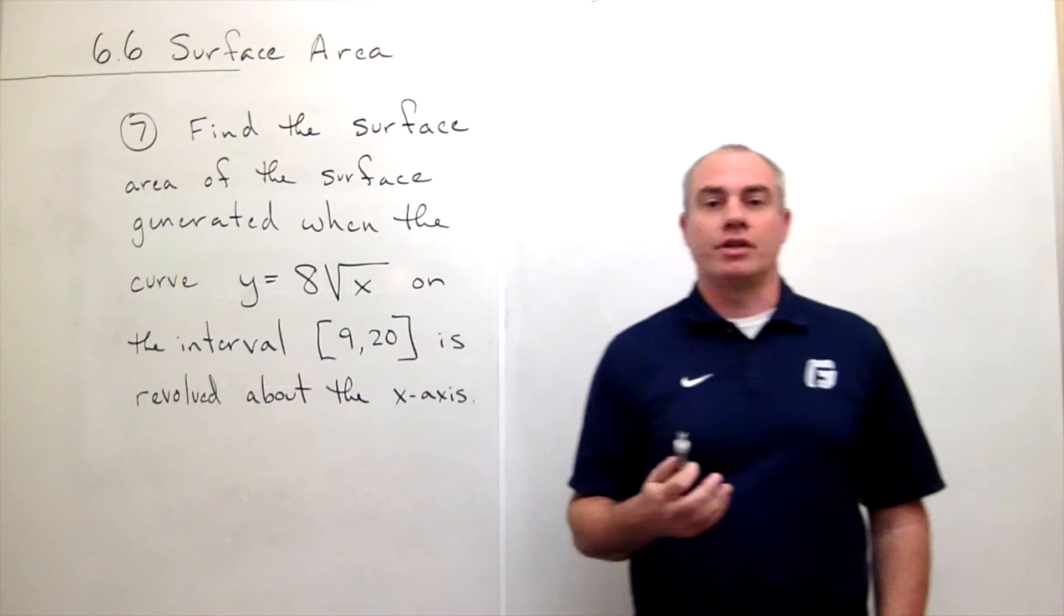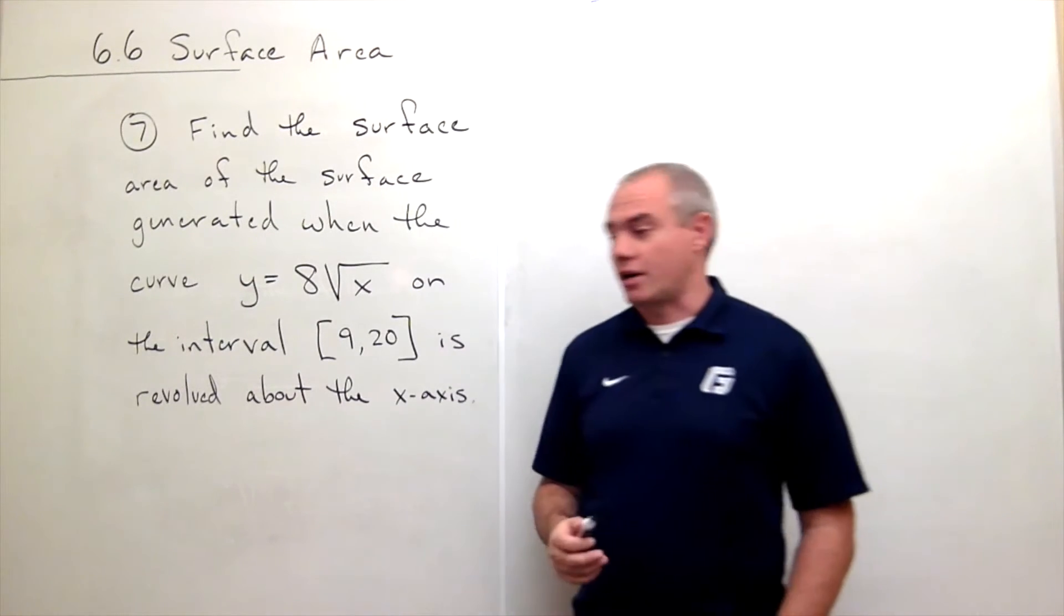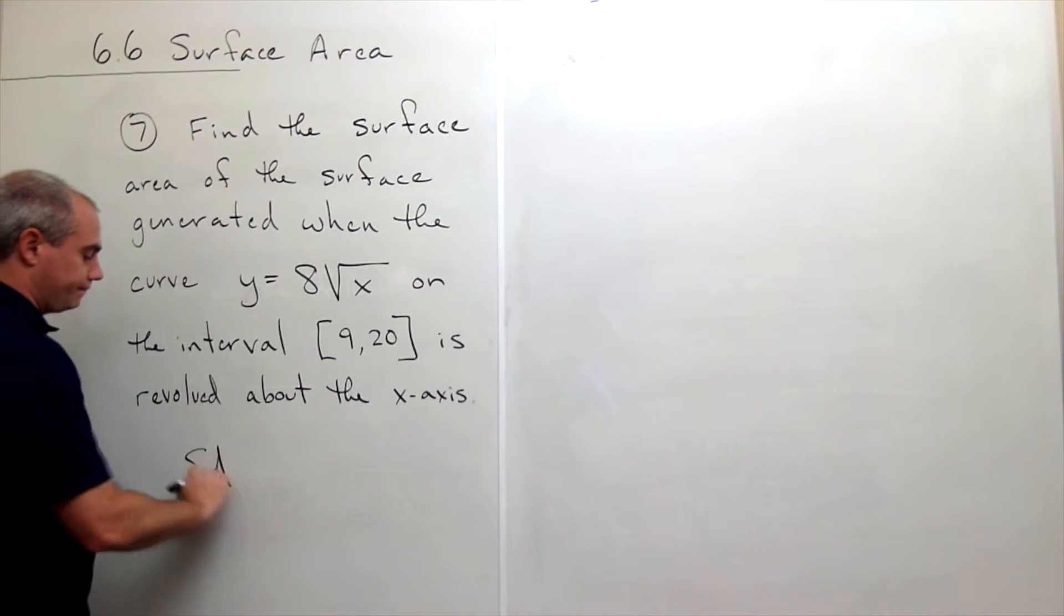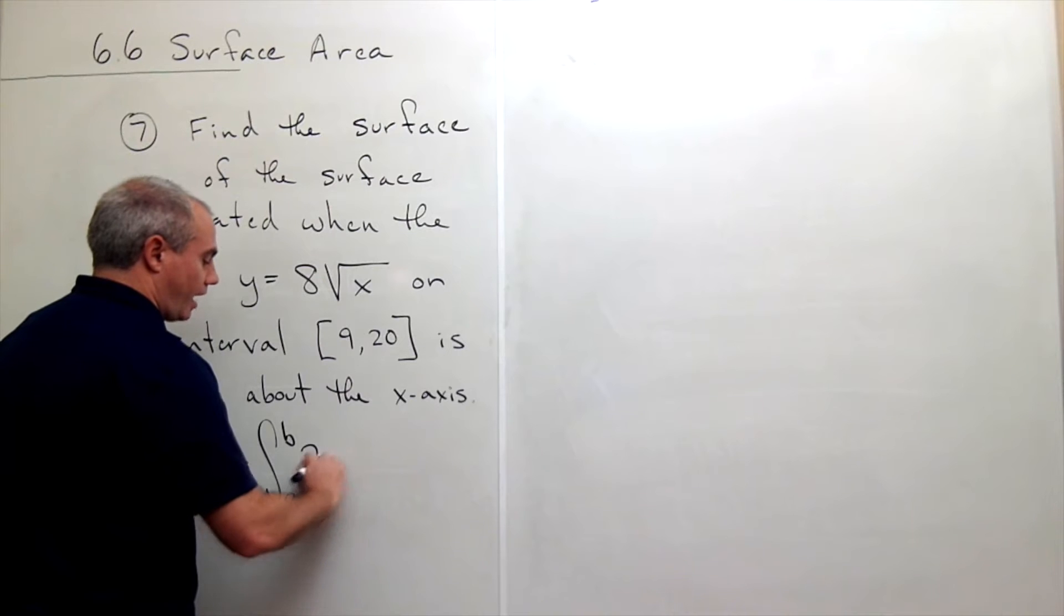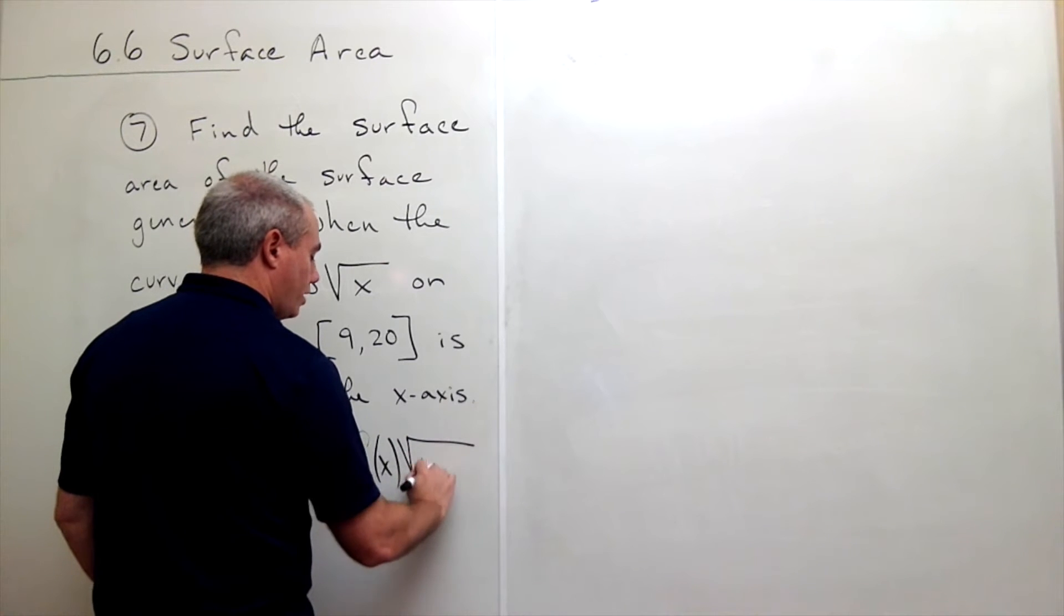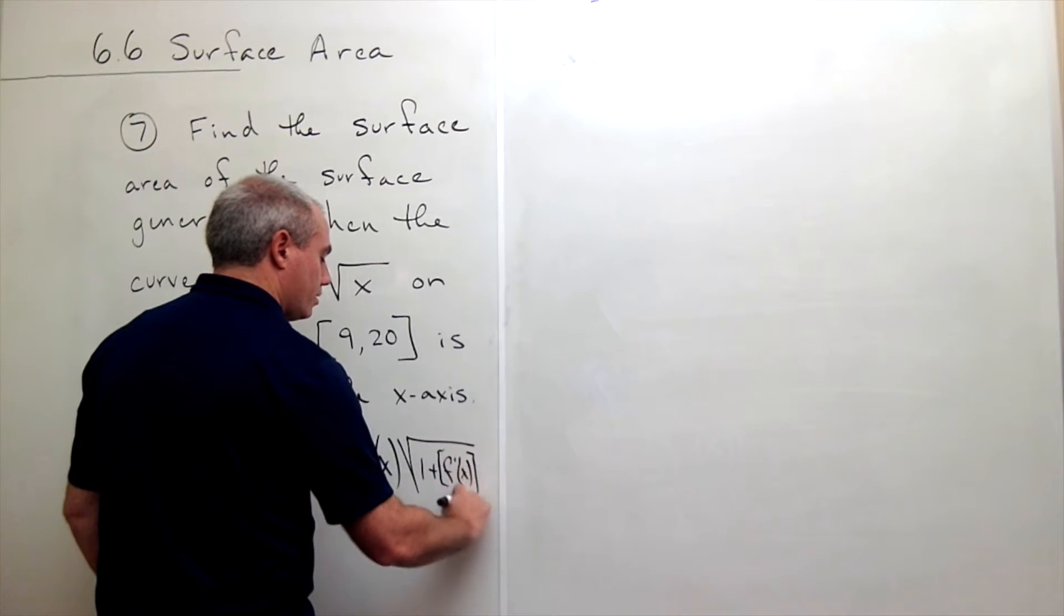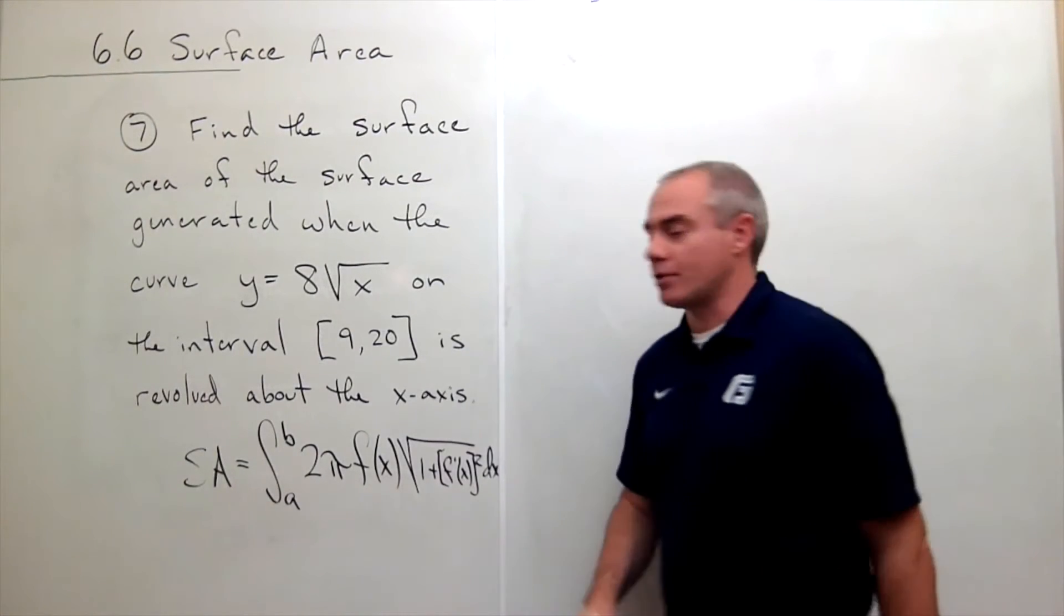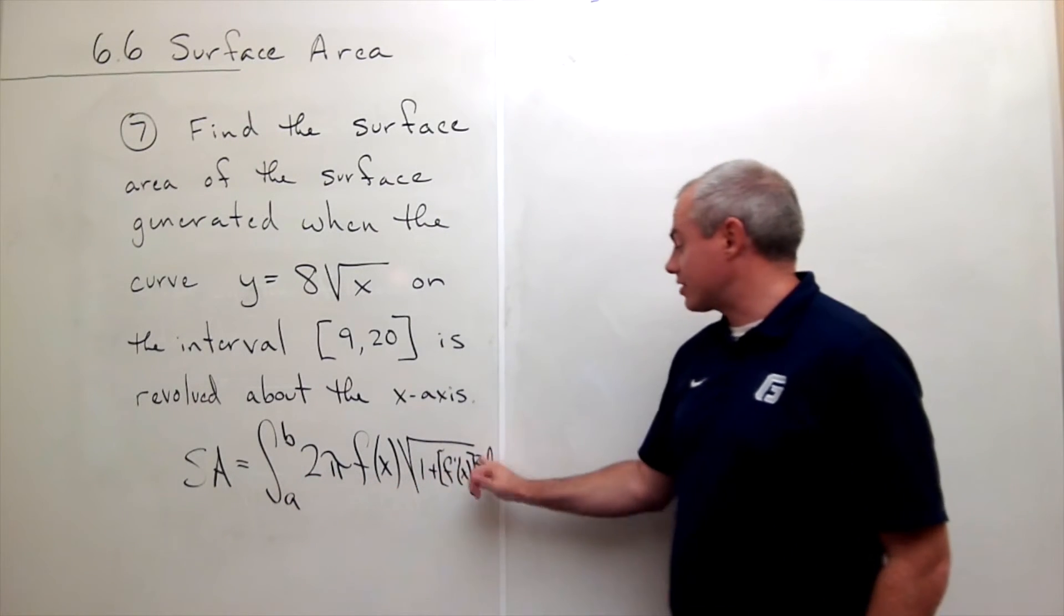The first thing we should talk about is let's remind ourselves what is the formula for computing surface area when you revolve around an axis. Surface area is equal to the integral from a to b of 2π times my function f(x) times the square root of 1 plus f'(x) squared dx. That's the formula that I need to remember: integral from a to b of 2π f(x) times the square root of 1 plus f'(x) squared dx.